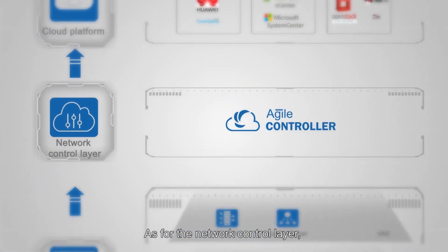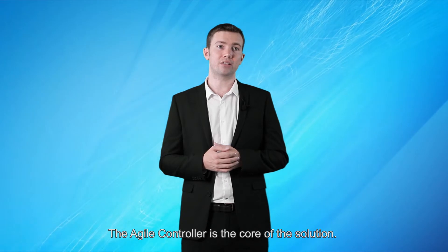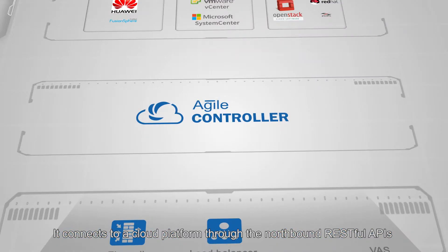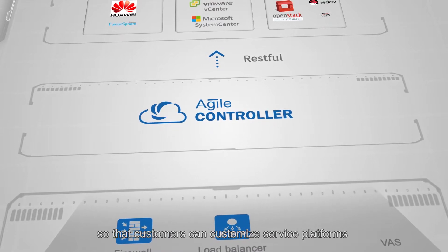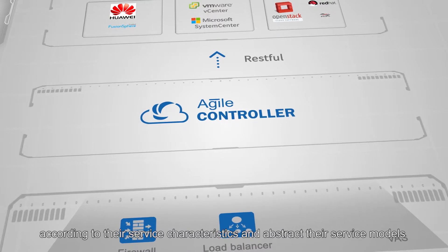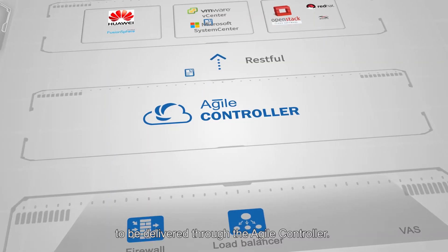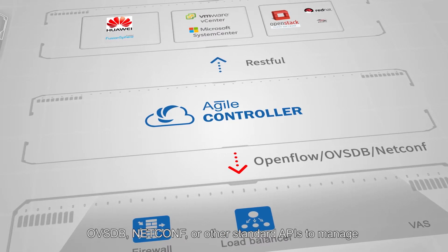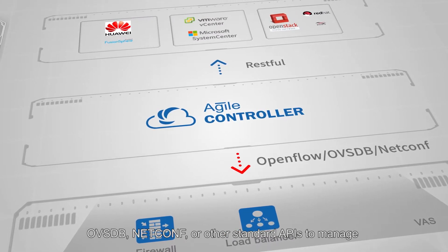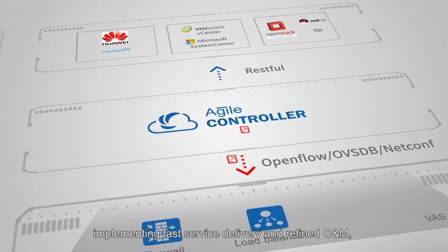As for the network control layer, it is implemented using Huawei's SDN controller, also known as the Agile Controller. The Agile Controller is the core of the solution. It connects to a cloud platform through the northbound RESTful APIs, so that customers can customize service platforms according to their service characteristics and abstract their service models to be delivered through the Agile Controller. In the southbound direction, the Agile Controller uses OpenFlow, OVSDB, Netconf, or other standard APIs to manage and configure network resources.